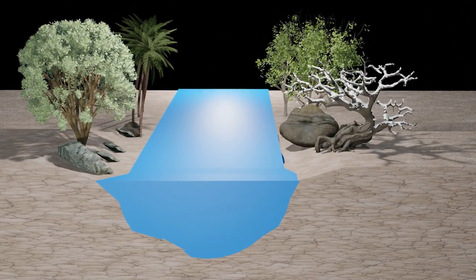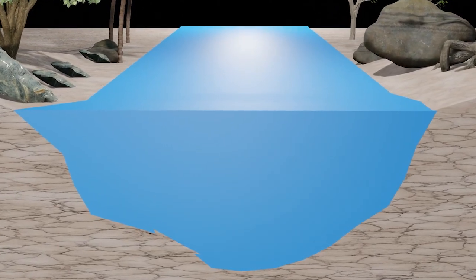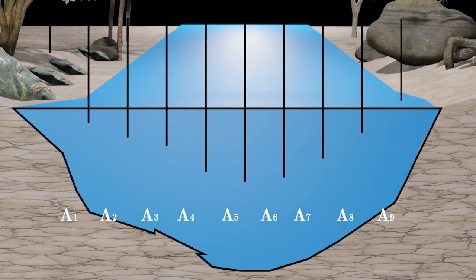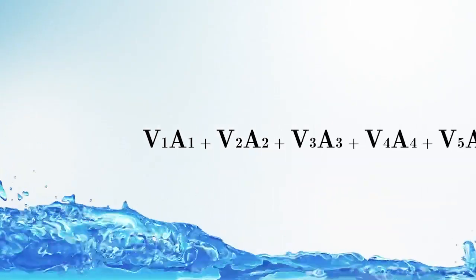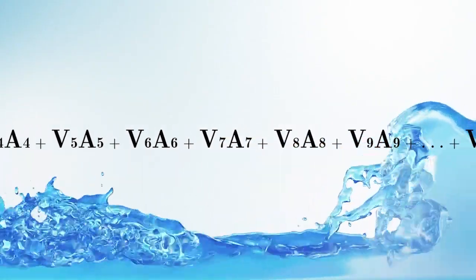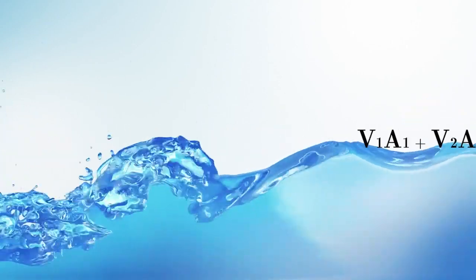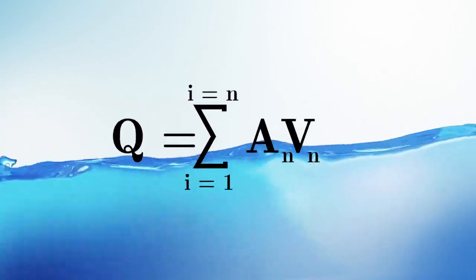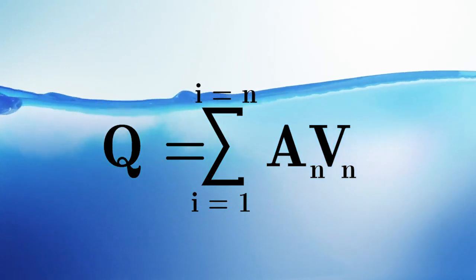Assuming that a river is now subdivided into smaller areas, each of those areas will be multiplied by the individual velocity to get the discharge for that particular section. It is the sum of these individual discharges which gives the flow rate for a river at that particular section for that particular time.